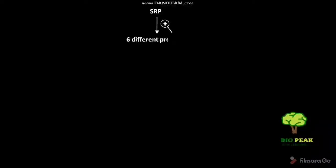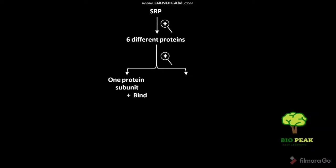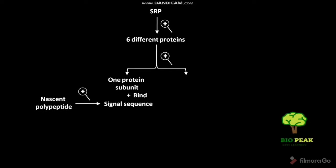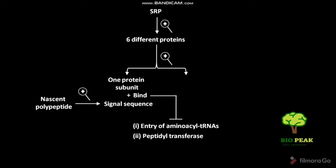As previously discussed, the SRP has six different proteins. Out of these six proteins, one protein subunit binds to the signal sequence of the nascent polypeptide. This binding sterically inhibits the entry of aminoacyl-tRNAs and also inhibits the peptidyl transferase. These two effects inhibit elongation.